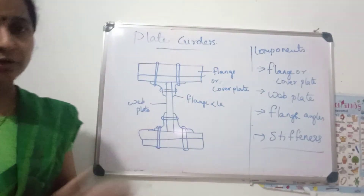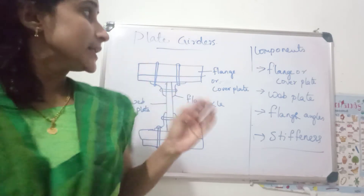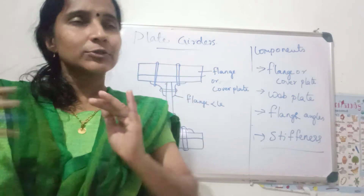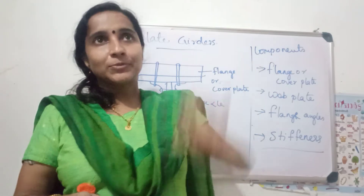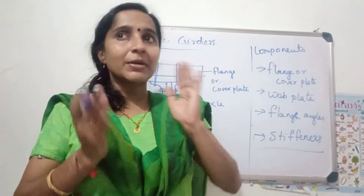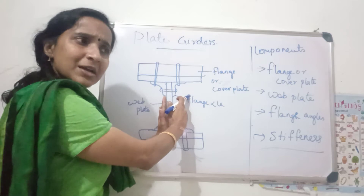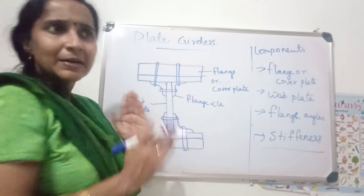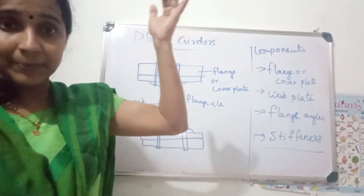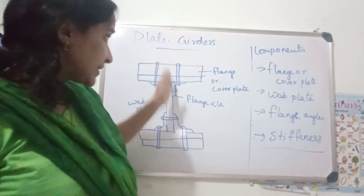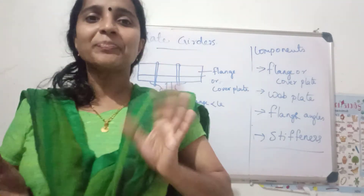Hi friends, this is a continuation of plate girder. If the plate girder is 5 meters in depth, then we have a slender plate. If the thickness of the plate is very less compared to the depth of the plate, the thickness of the web is very less.